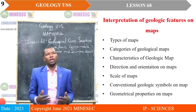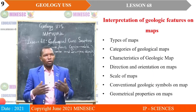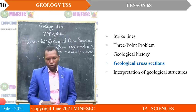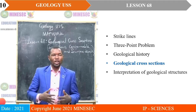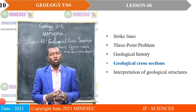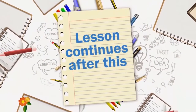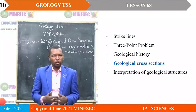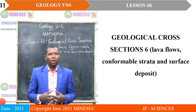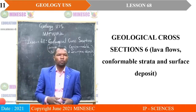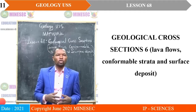We are still on map work, under the subtopic: interpretation of geological features on maps. We saw different types of maps, right up to strike lines and three-point problems, and we have seen geological history. Our lesson today will be on geological cross-sections six, where we will concentrate on drawing cross-sections of lava flows, conformable strata, unconformable strata, and surface deposits.